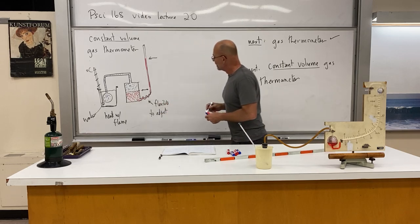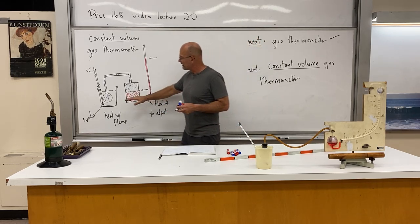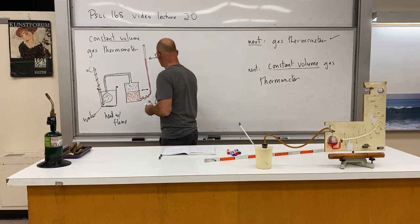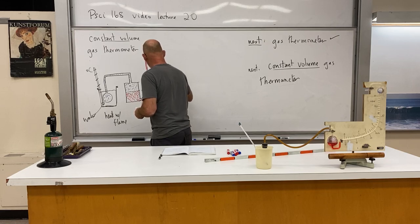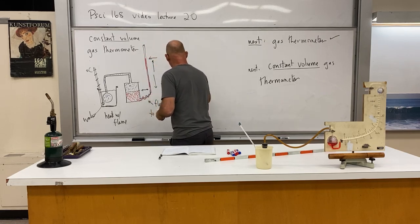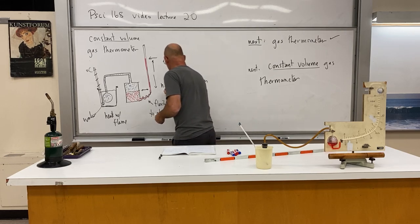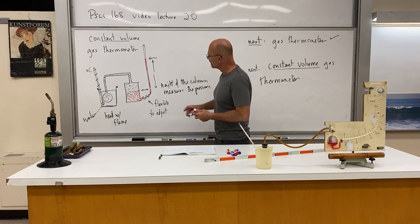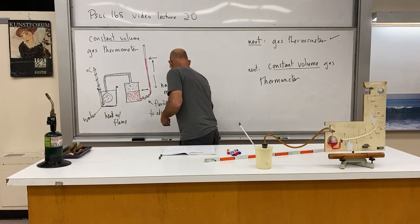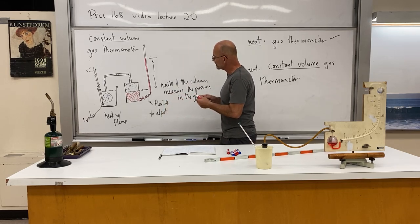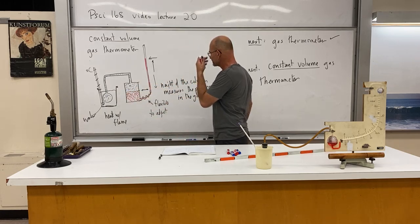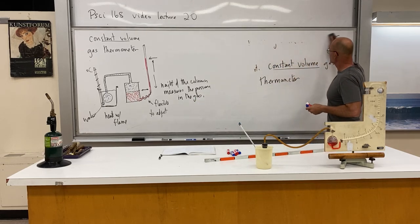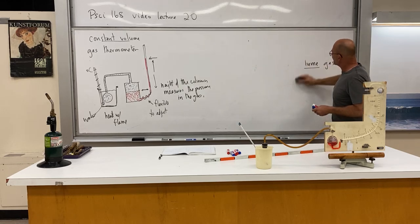Now, we're going to make a series of measurements. And as the temperature increases, the pressure increases. The height of this column measures the pressure. So let's go ahead and note that as well. Height of the column measures the pressure. And the pressure where? The pressure in the gas. And, of course, the pressure in the gas is what's pressing down on this thing here. So we have that constant volume gas thermometer.